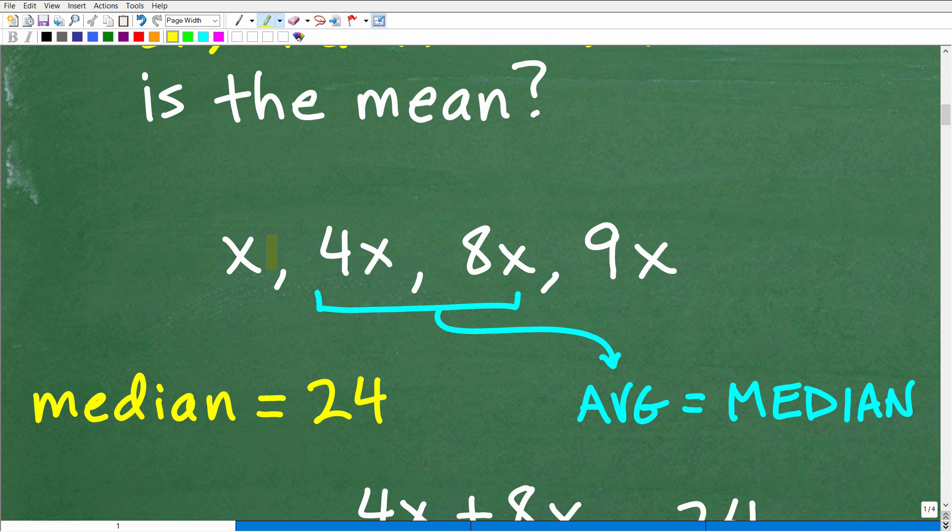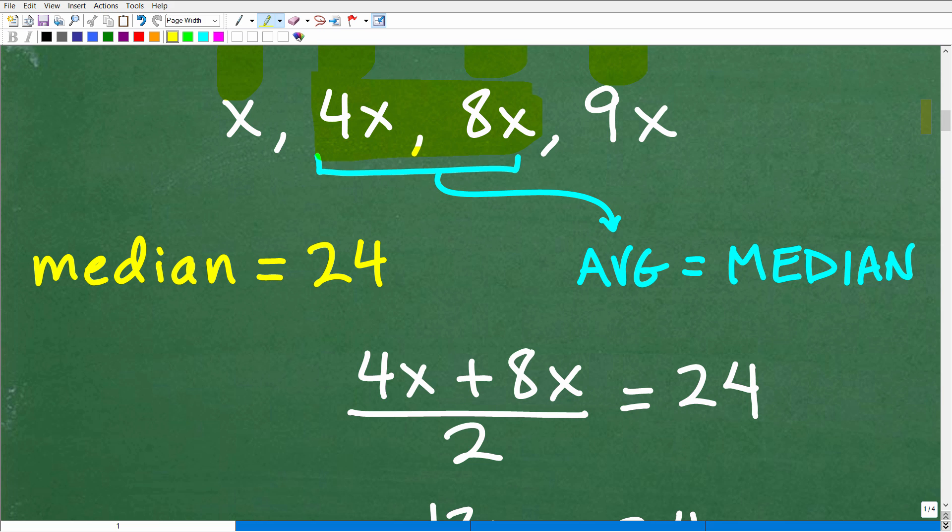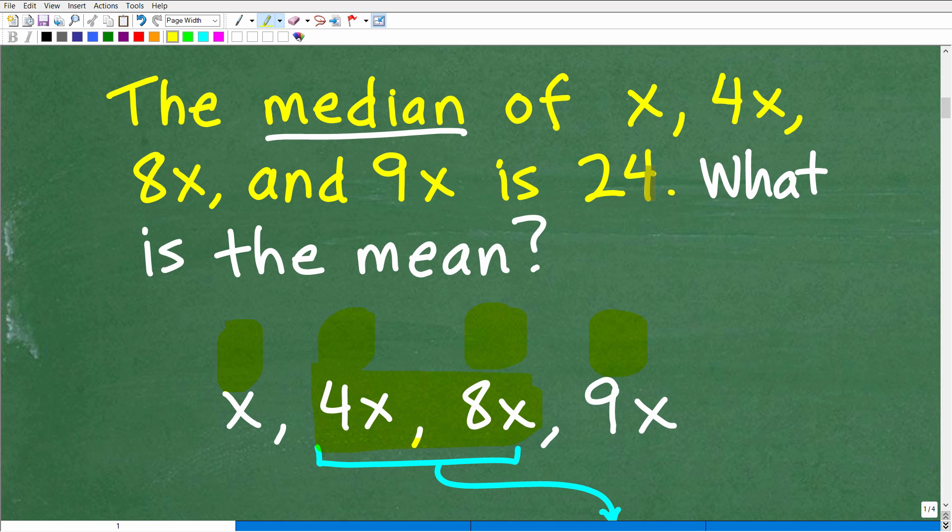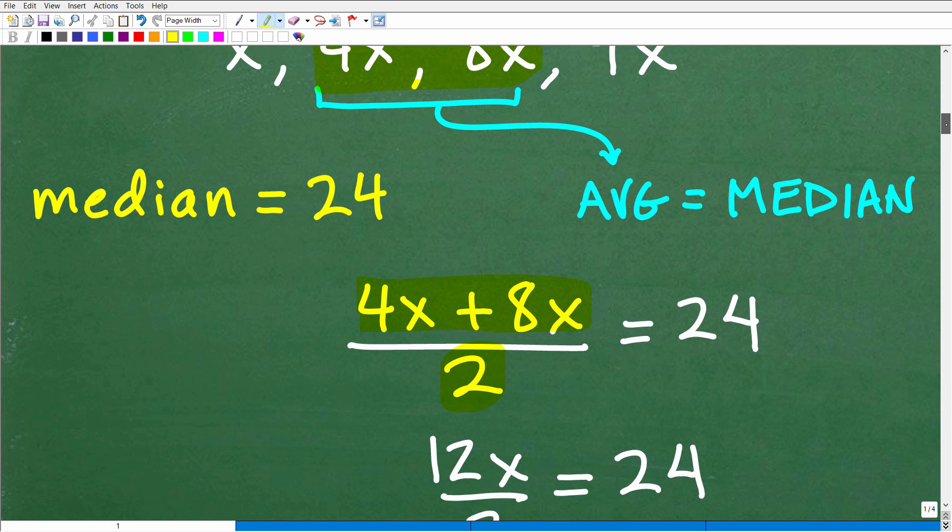So here we have x, 4x, 8x, 9x. We're just to assume that x is positive and not negative. So if that's the case, we can order these numbers. And of course, we don't know what these are, but these are values from lowest to highest. So here would be x. Of course, 4x is more than x. Of course, 8x is more than 4x, and 9x is the greatest. So here's lowest to highest. So notice we only have four pieces of data. How do we find the median? Well, it's what I explained to you just a moment ago. What we need to do is average the two pieces of data that are closest to the middle. In this case, it's 4x and 8x. So how do we find the average of 4x and 8x? Well, we have two pieces of data. So all we need to do is take 4x and 8x and divide that by two.